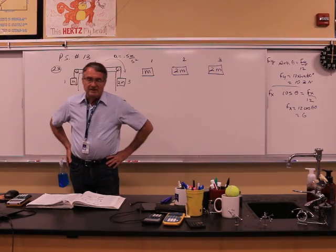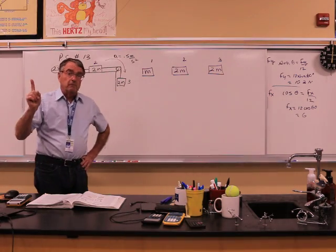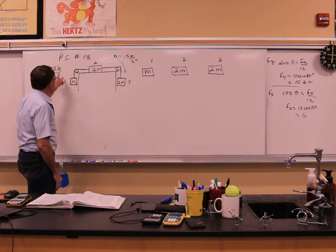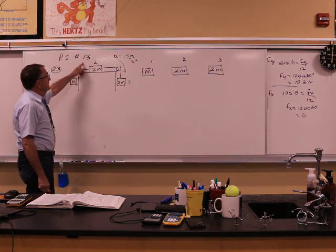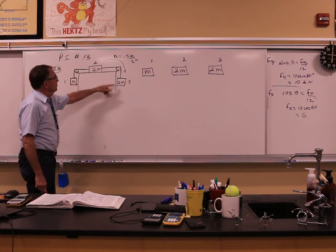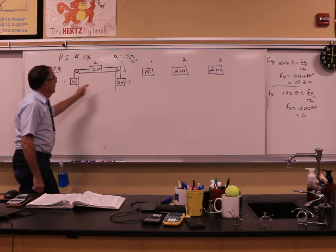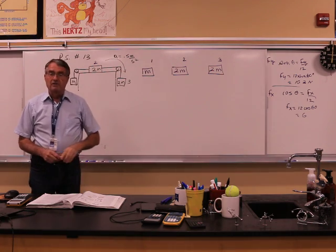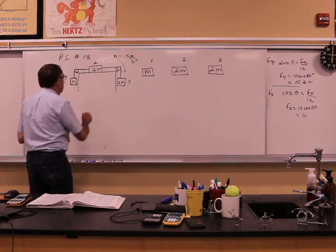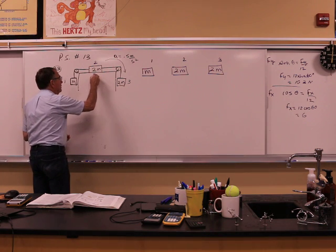Well hello students, again Mr. Eklund doing another problem for you. This is problem 23 on problem set number 13. You have one, two, three masses on a table moving this way, acceleration is 0.5. And the question is, find the friction right there.